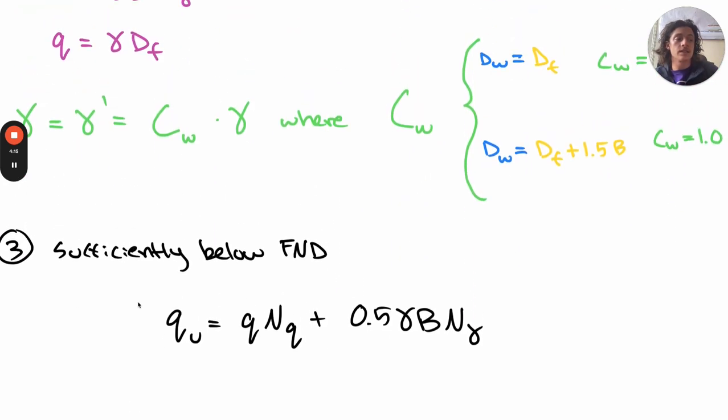When the water table is sufficiently below the foundation, we disregard the effects of the water table and use the equation as normal.